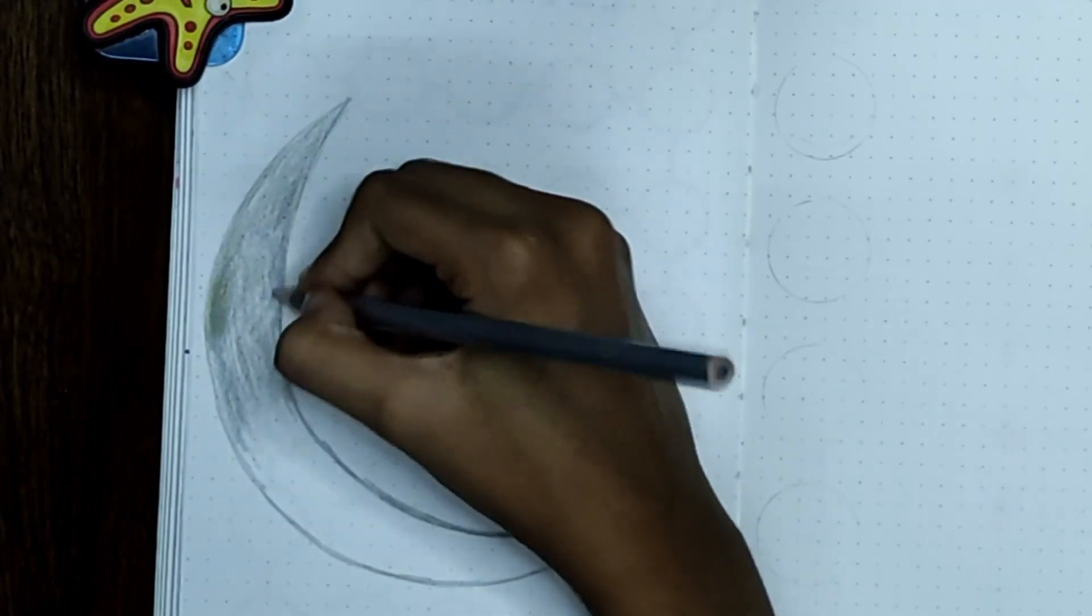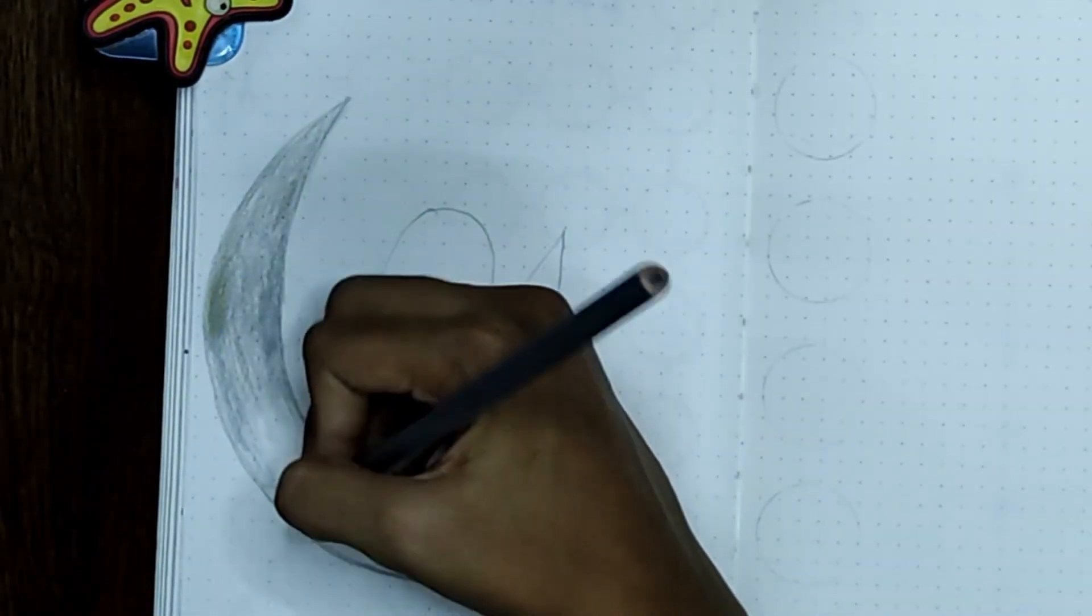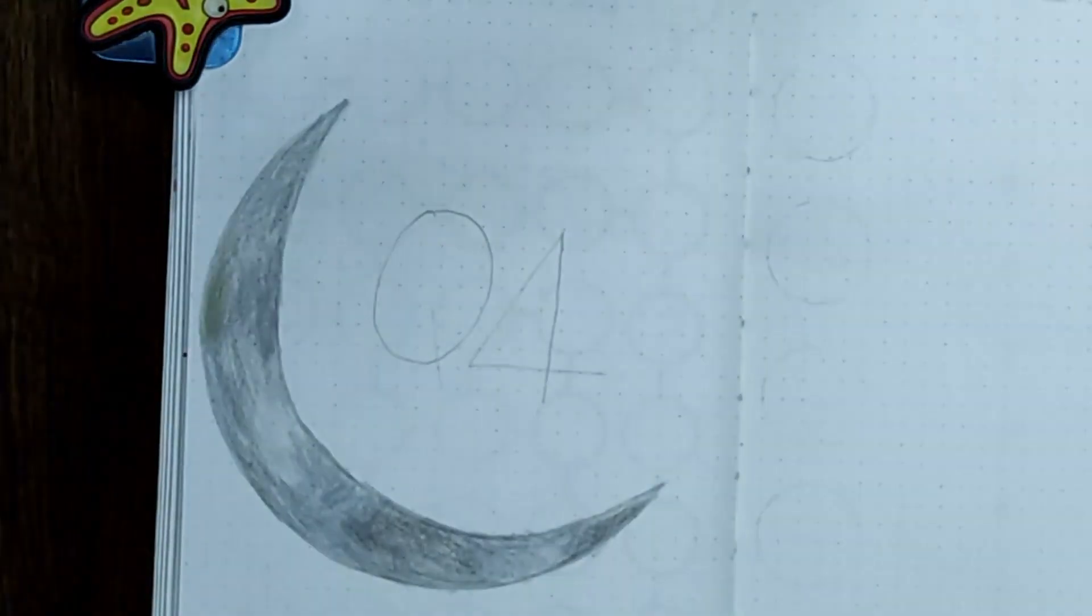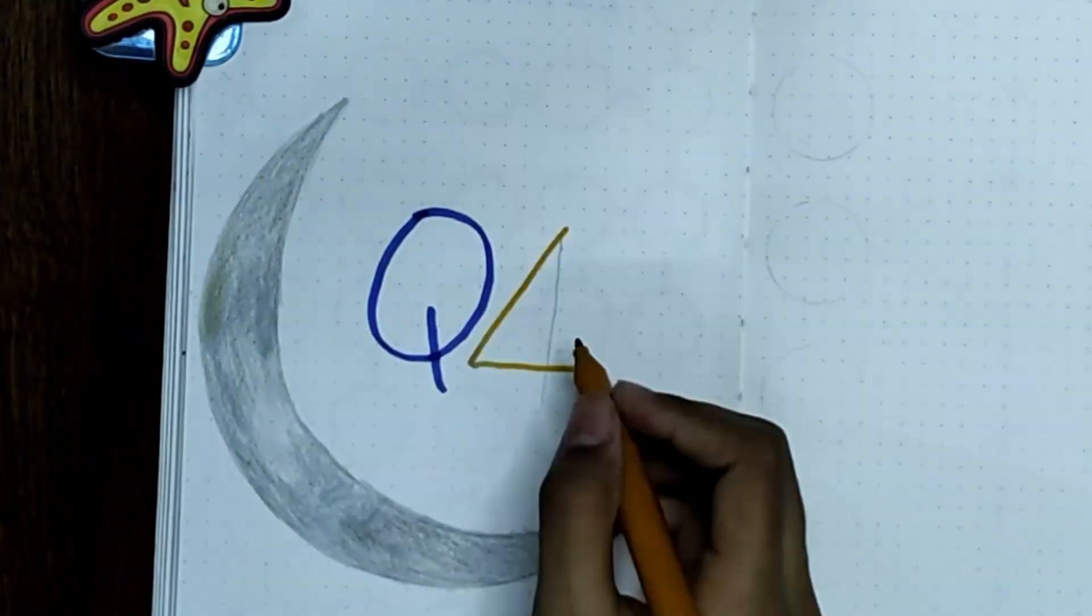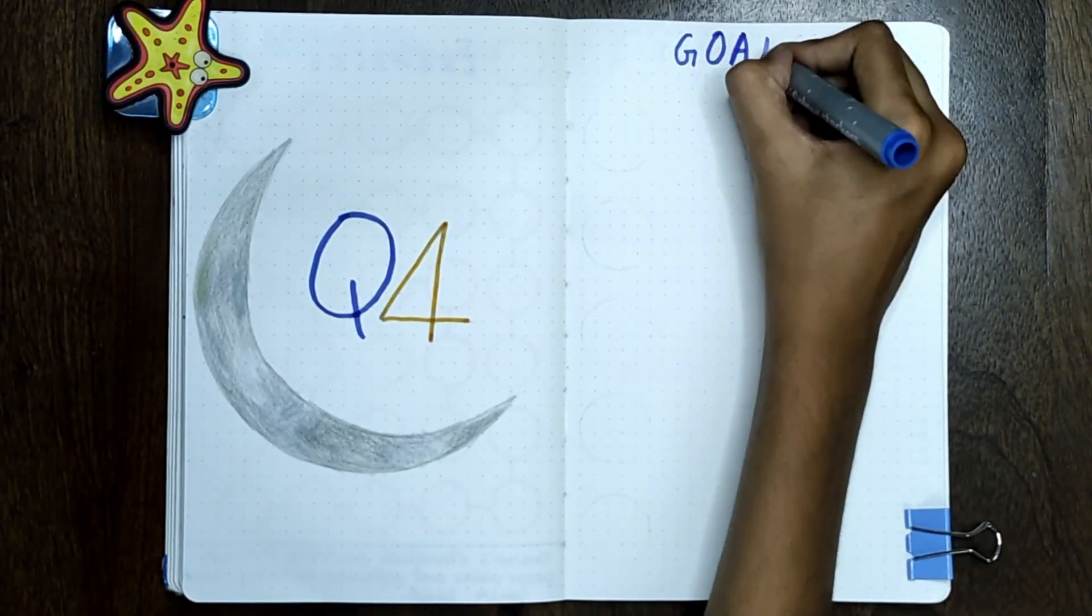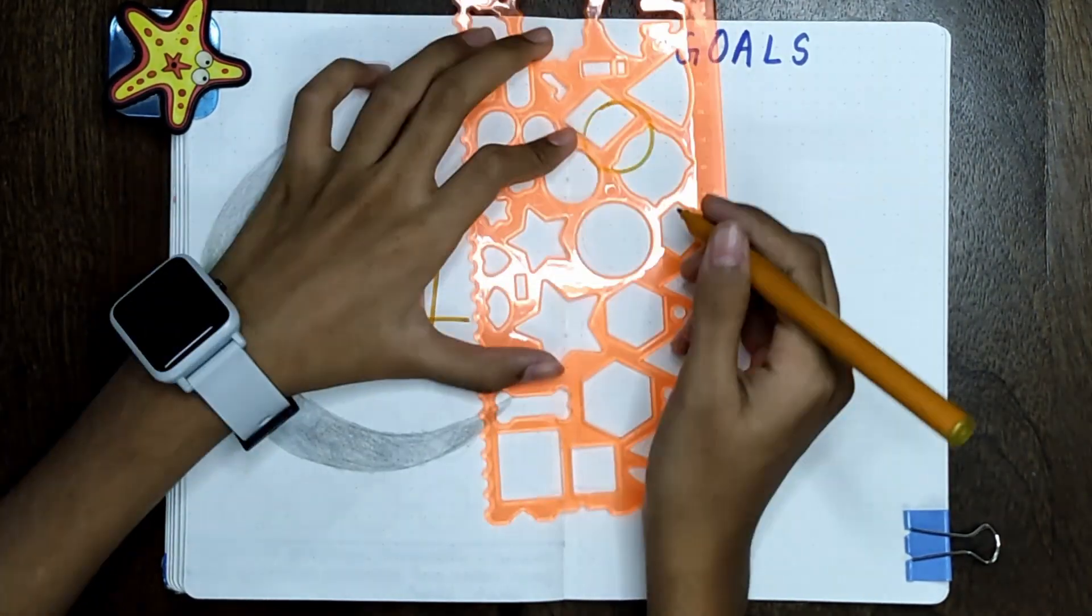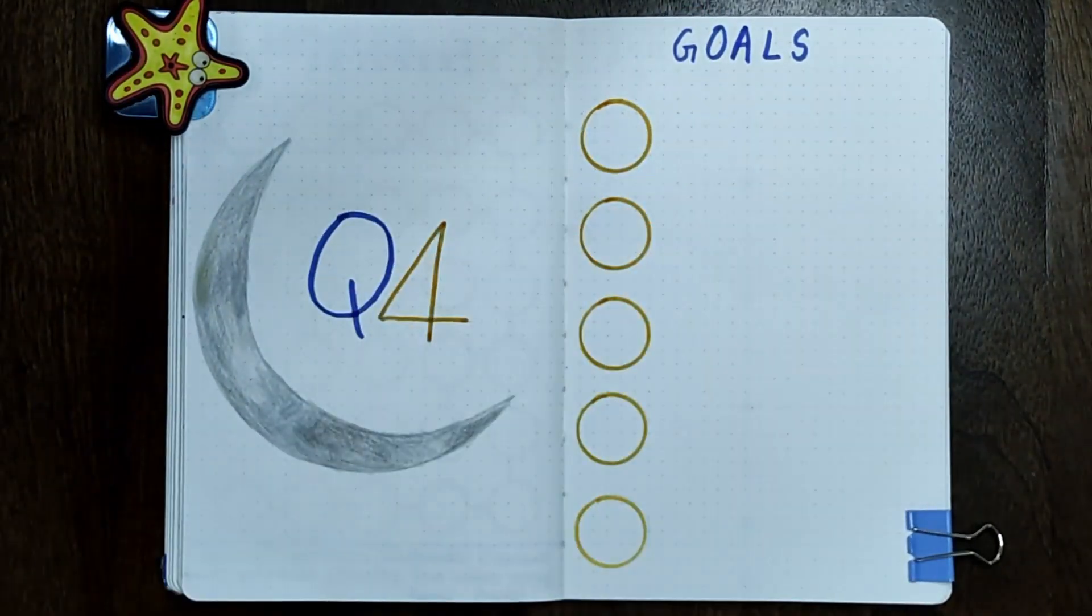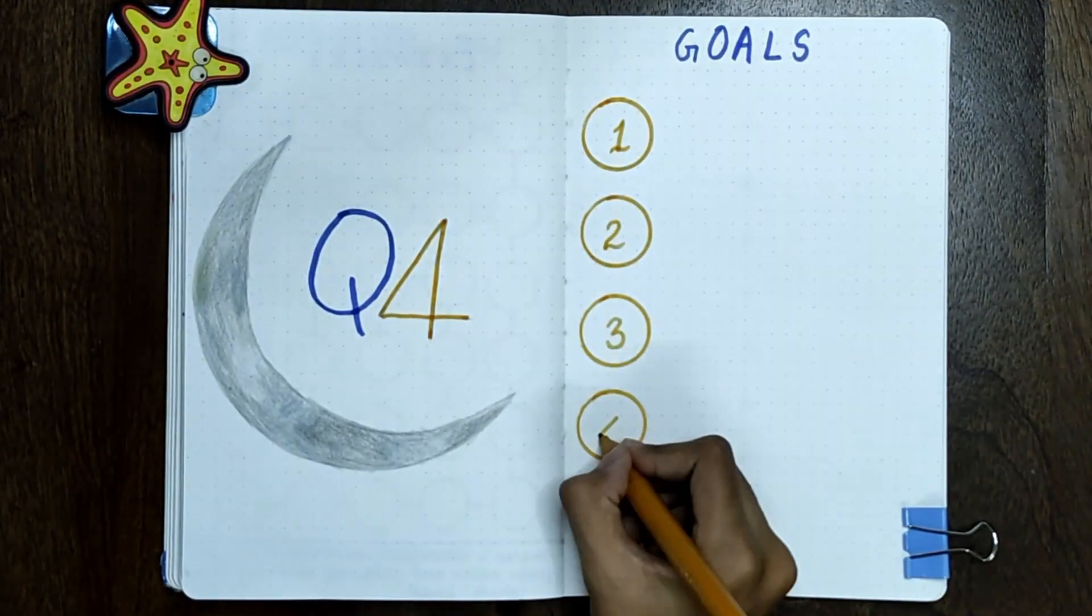So again here, similar to the quote page setup, I've decided to draw a crescent moon, but this time it's on the left side. And then inside that kind of circle of the moon, I'm just going to write 'quarter four.' And on the right side, I have drawn five circles for the five different goals.